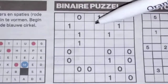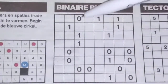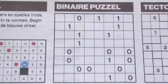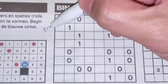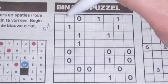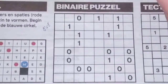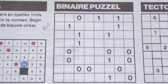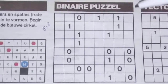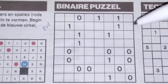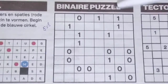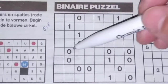Alright, let me count first. 1, 2, 3, 4, 5, 6, 7, 8. So it's an 8 by 8. So 4 O's and 4 1's in a row or in a column. That is the rule of this game or puzzle. So let's get started.